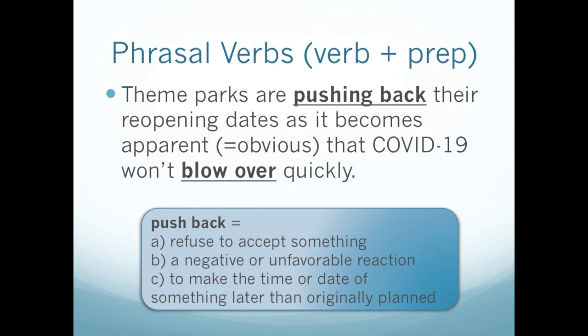Let's guess what push back means. Do you think it's A, refuse to accept something; B, a negative or unfavorable reaction; or C, to make the time or date of something later than originally planned? Remember, phrasal verbs act like verbs. A — refuse — that's a verb, so that's a possible answer. B — a negative or unfavorable reaction — that's a noun, so it can't be B. C — to make — that's a verb, so that's another possibility. The correct answer is either A or C. If you said C, you're correct. If they're pushing back their reopening dates, they're going to make them later than originally planned.